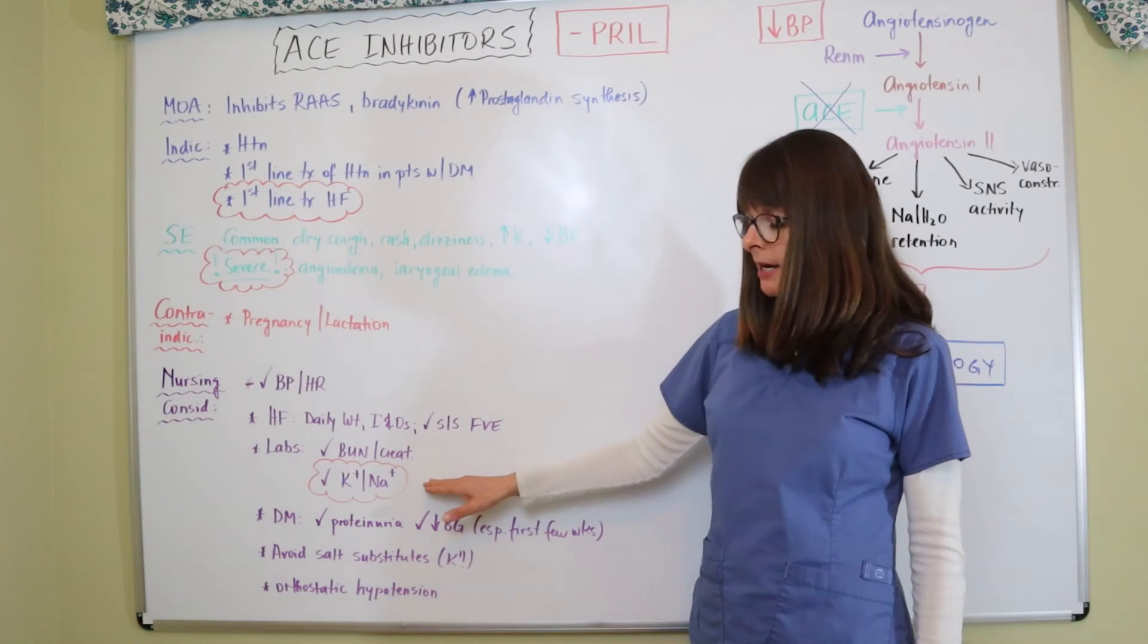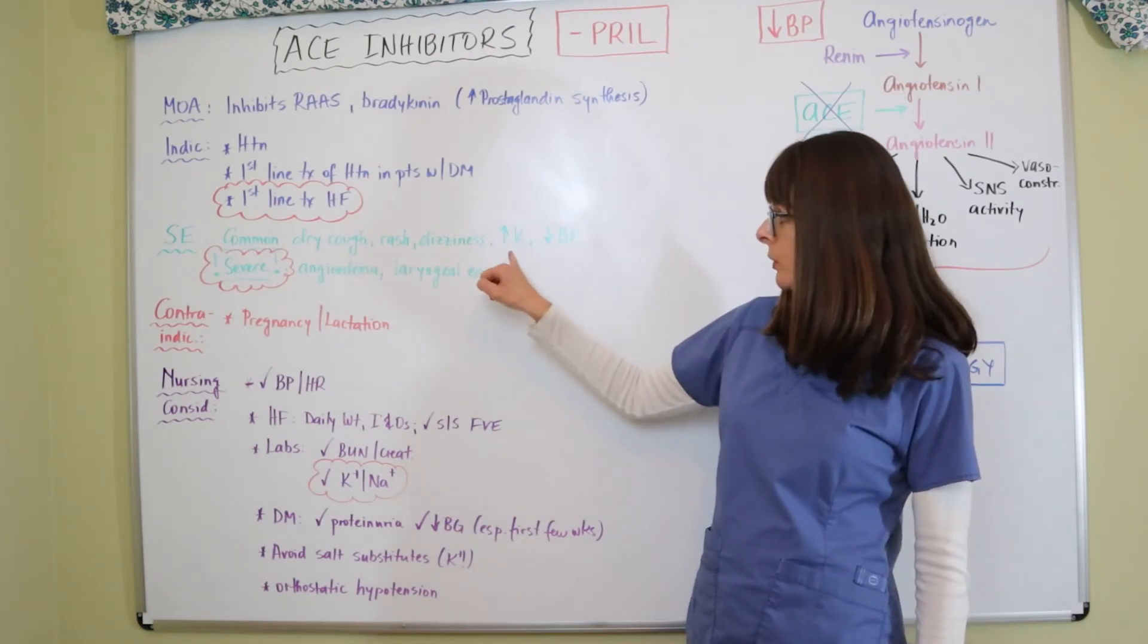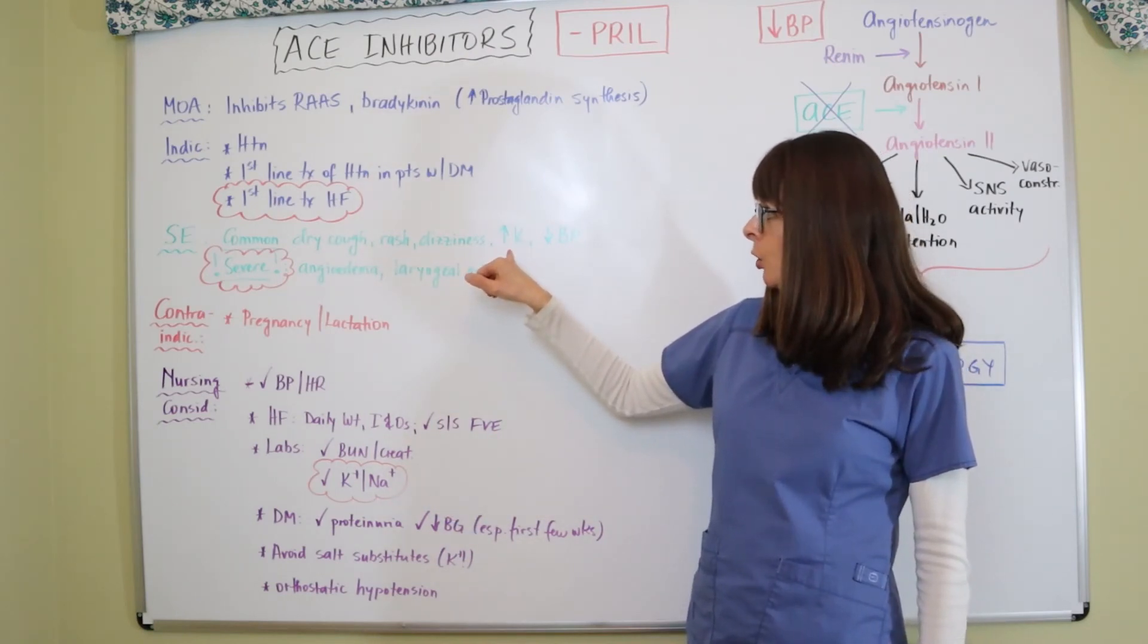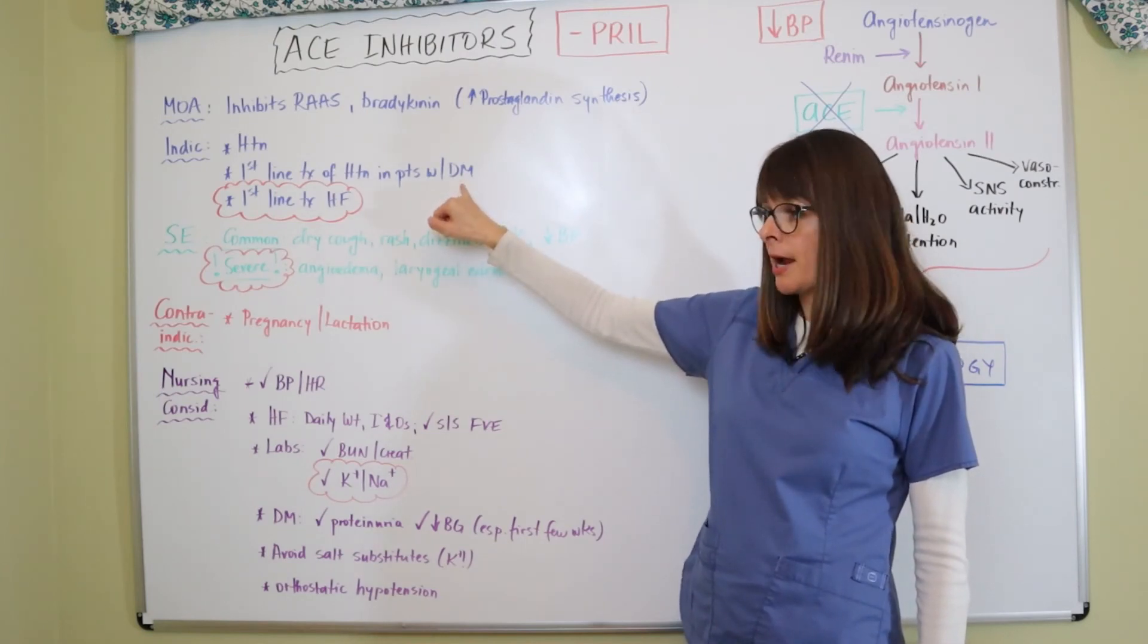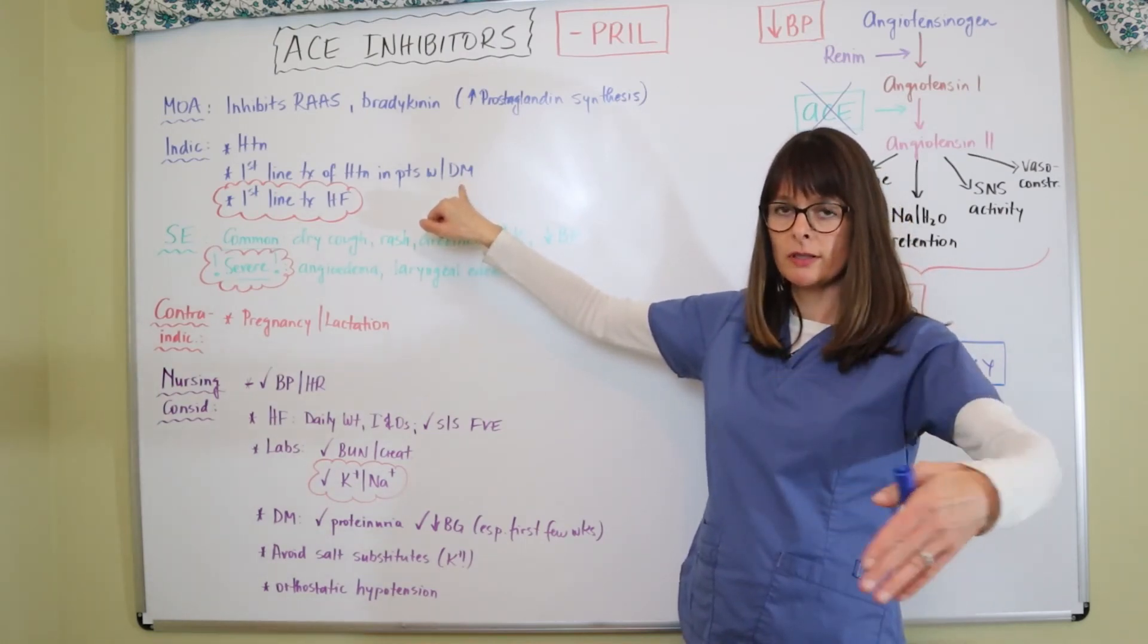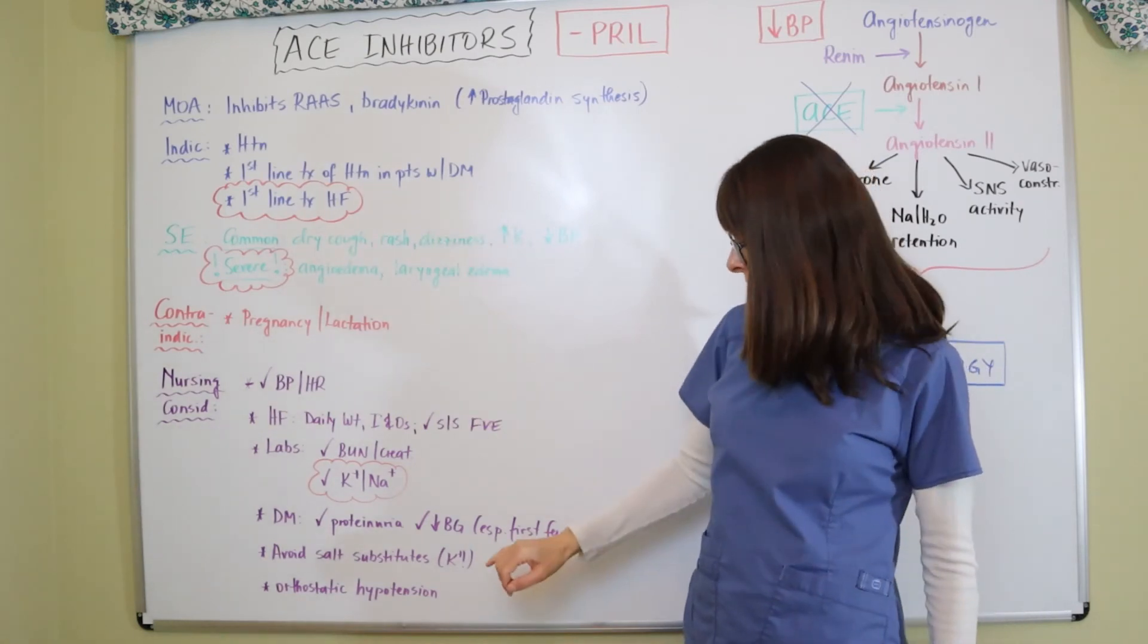Also, we want to check their potassium and sodium levels because we know it can cause hyperkalemia, which can be especially dangerous in patients with diabetes if they tend towards the later stages of renal disease.